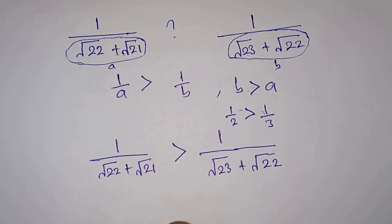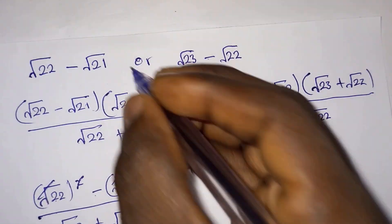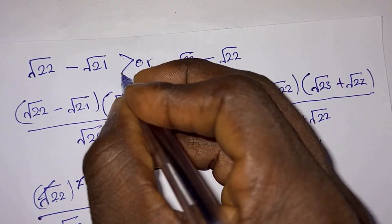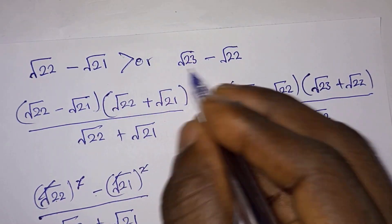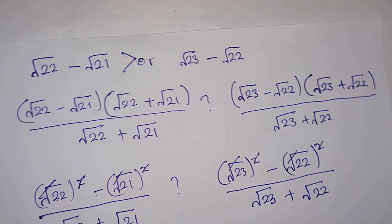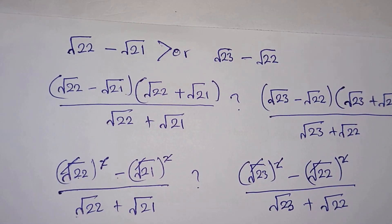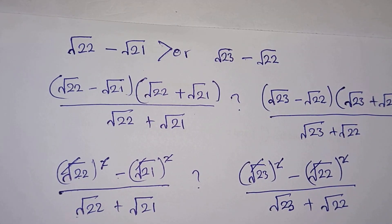So this answers the question: √22 minus √21 is greater than √23 minus √22. Subscribe to my channel for more videos, thanks for watching, see you again in the next video, bye bye.